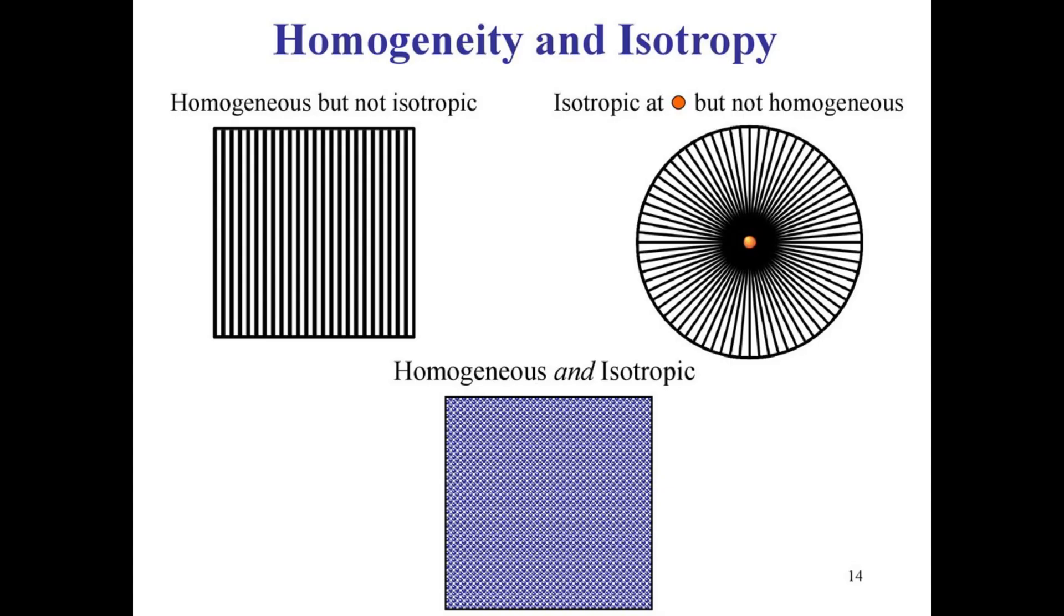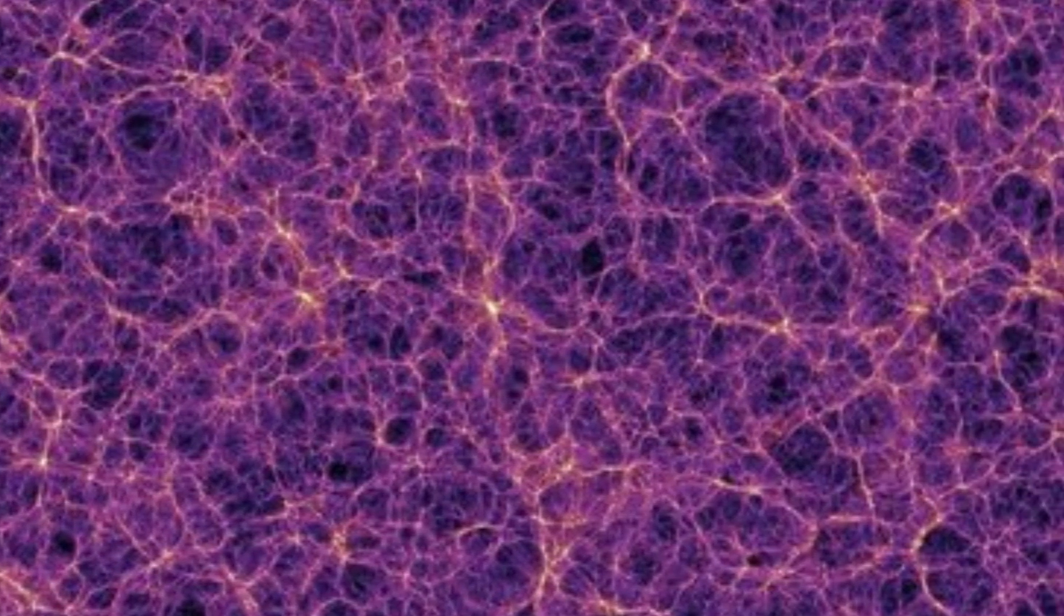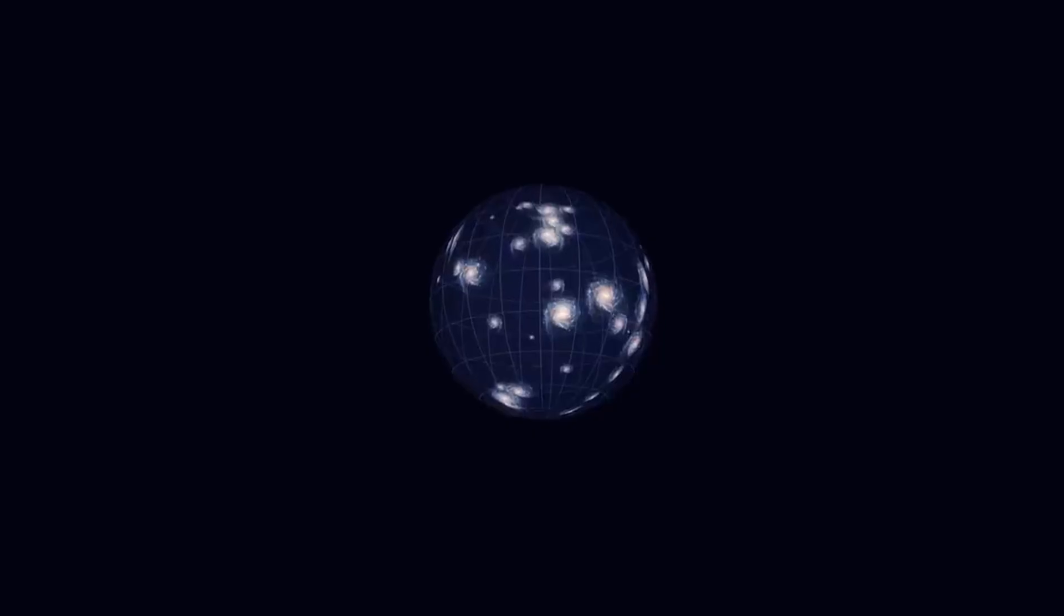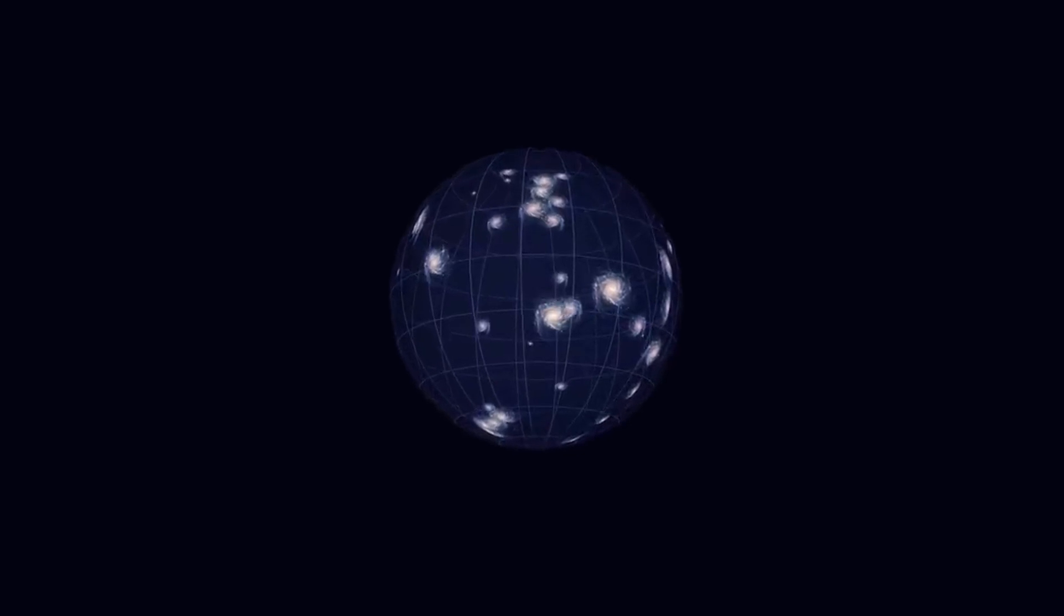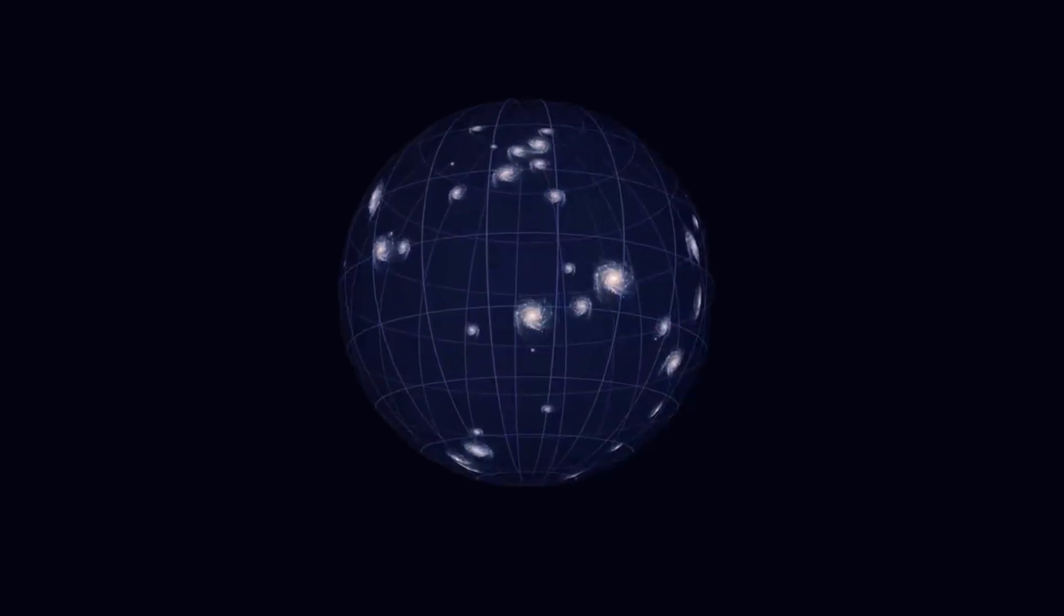The universe on a large scale is homogenous and isotropic, which means that if we take two large pieces of the universe, they will not differ much. And no matter which direction you look, you will see the same thing. Because of the cosmological principle, it seems to us that we are at the center of expansion, although in reality there is no center.